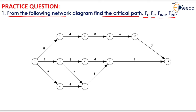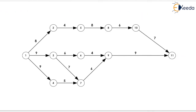We have to find the critical path, total float, free float, independent float, and interfering float. The network is shown here. First of all, we will calculate the event time TE, TL, and slack for all the events.